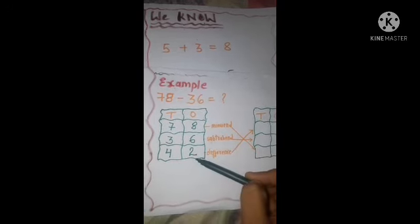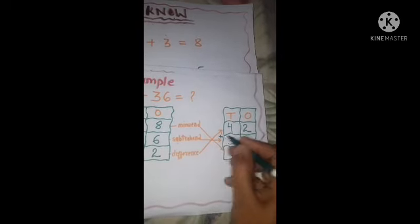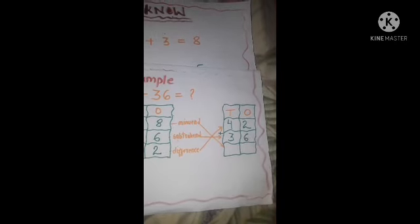Our difference is 42. Now we check whether we did the problem correctly. We write the difference 42 on top and the subtrahend 36 on the bottom, and we add them. In the ones column we have 2 and 6. Starting after 6, we count forward 2: 7, 8. We get 8 in the ones place.